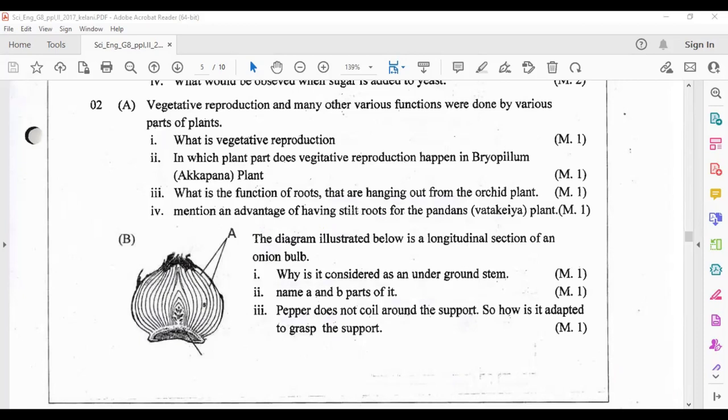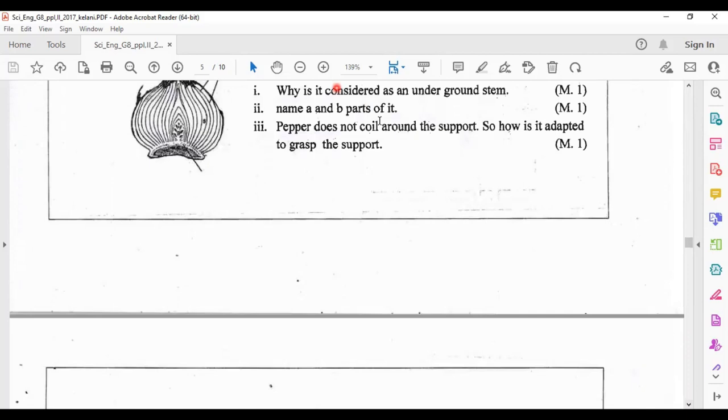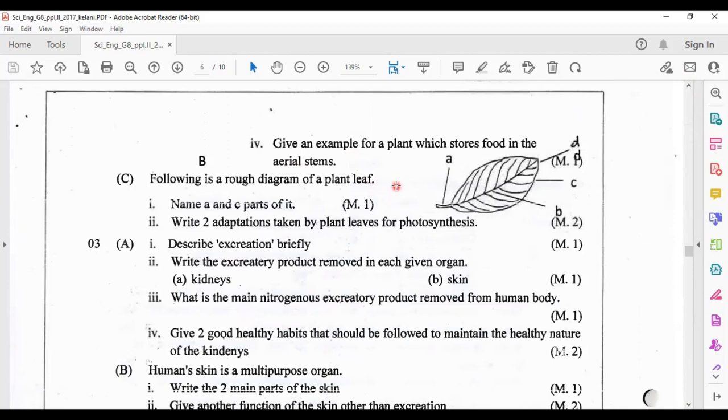Pepper does not coil around the support, so how is it adapted to grasp the support? The way is pepper has climbing roots, by using their climbing roots. Give an example for a plant which stocks food in aerial stem. You can write sugarcane and Keith will also be correct.